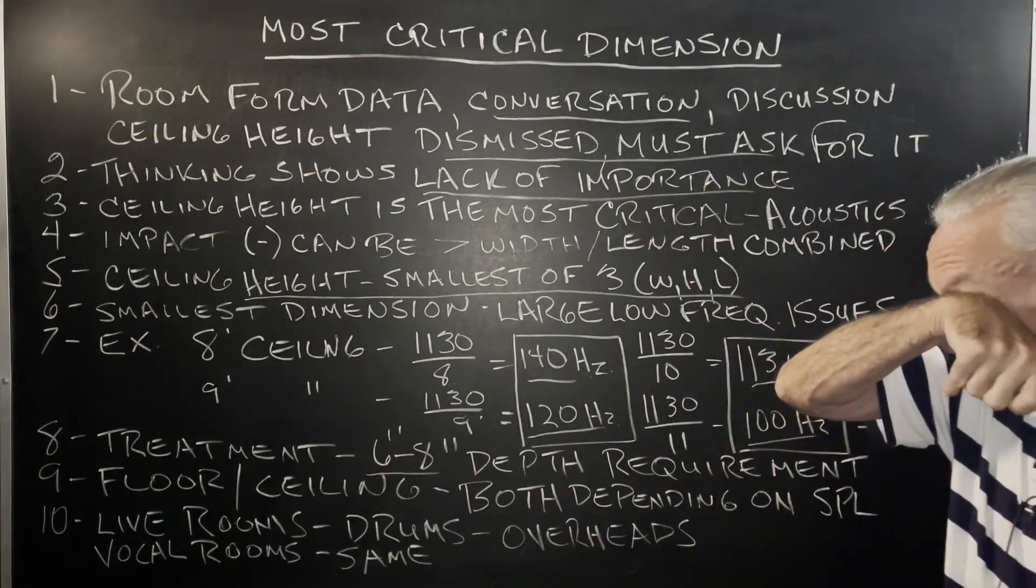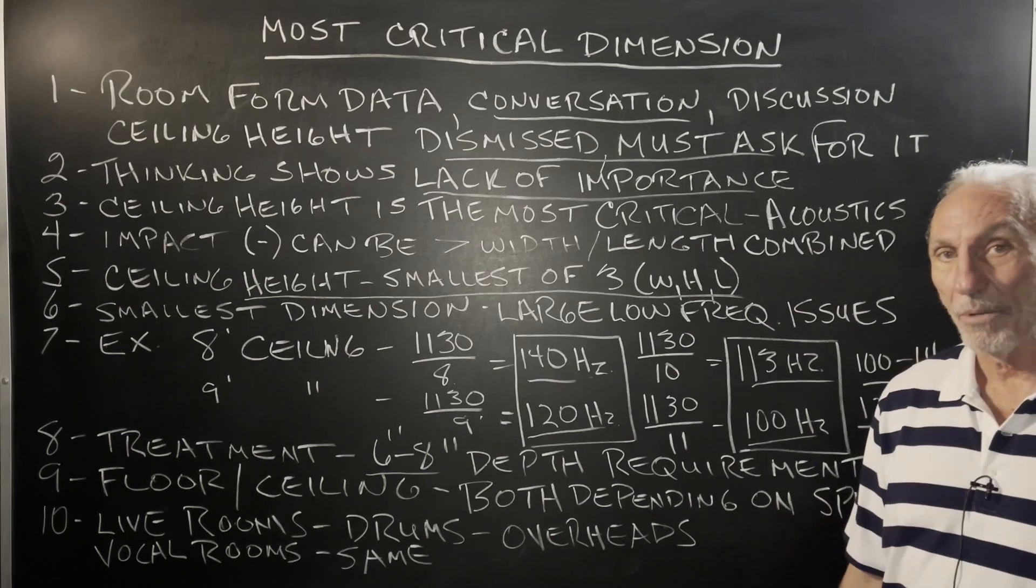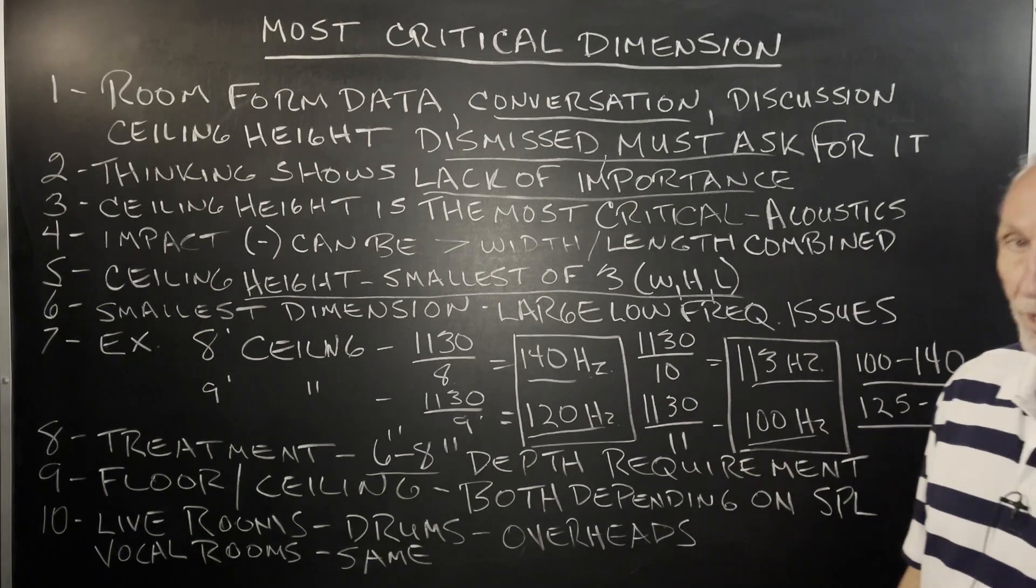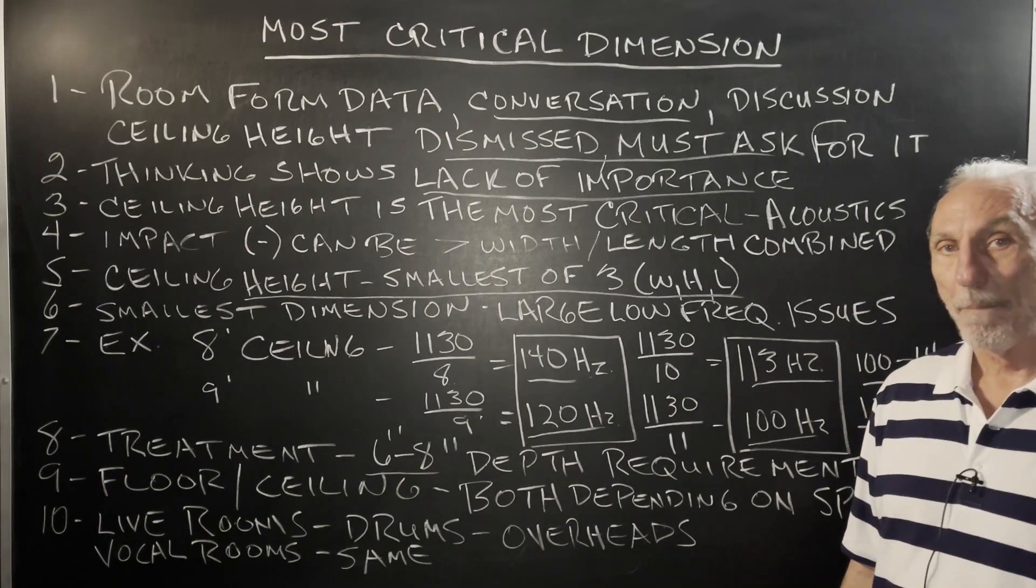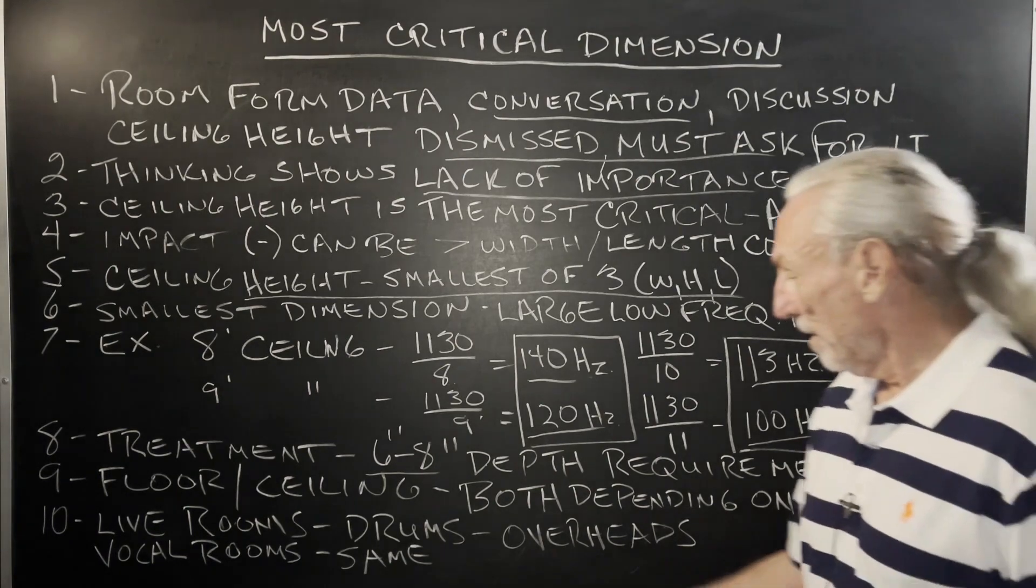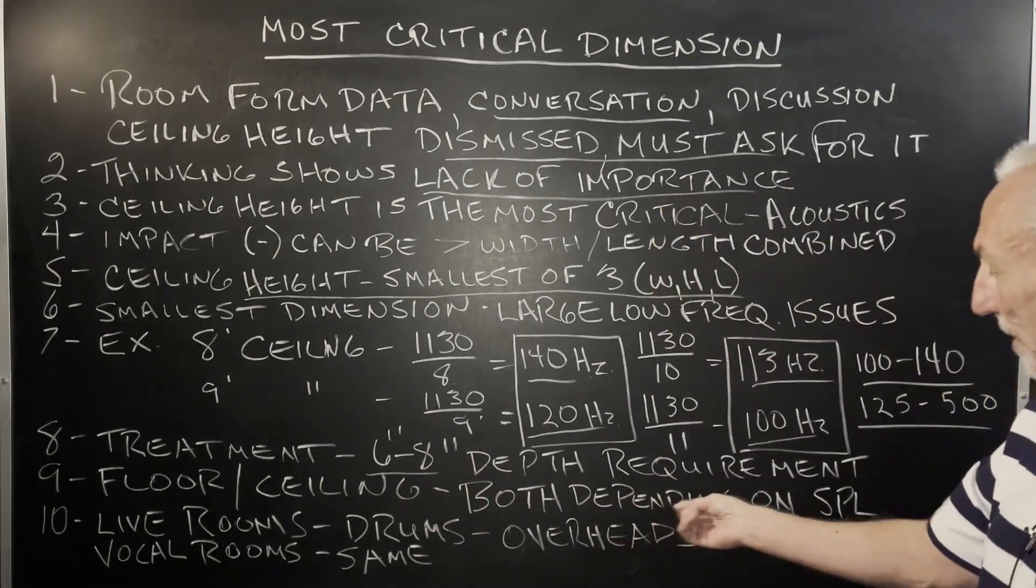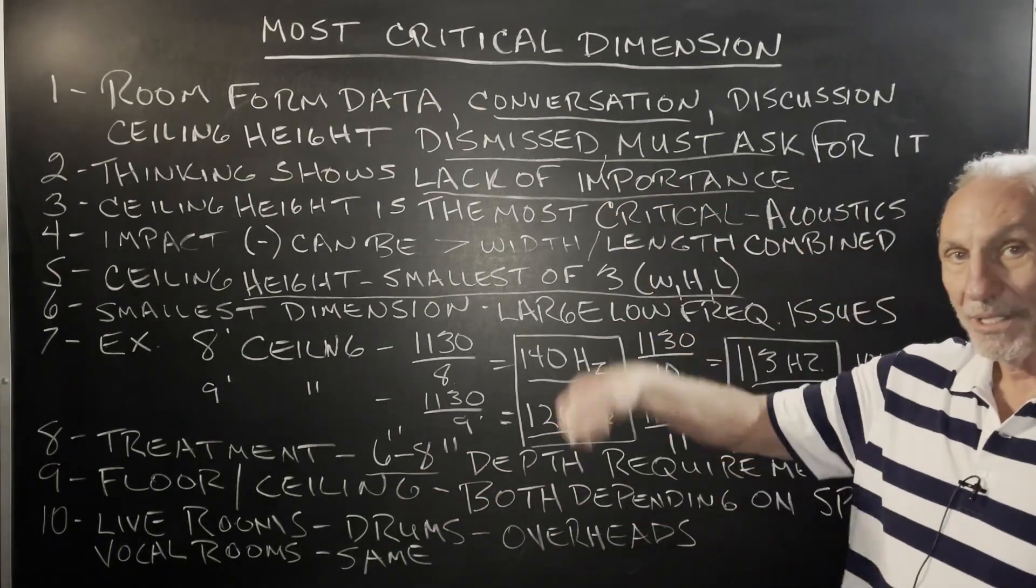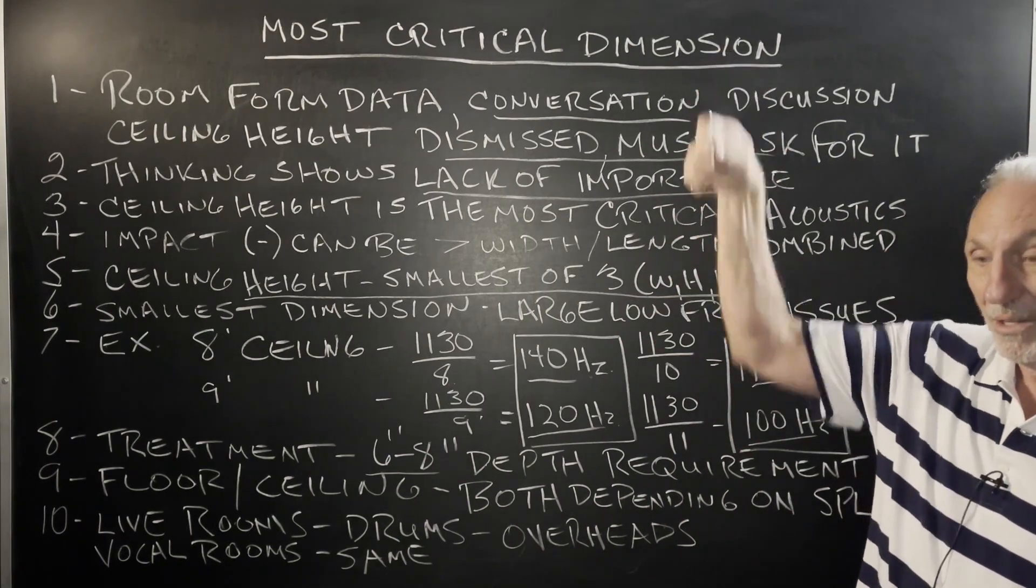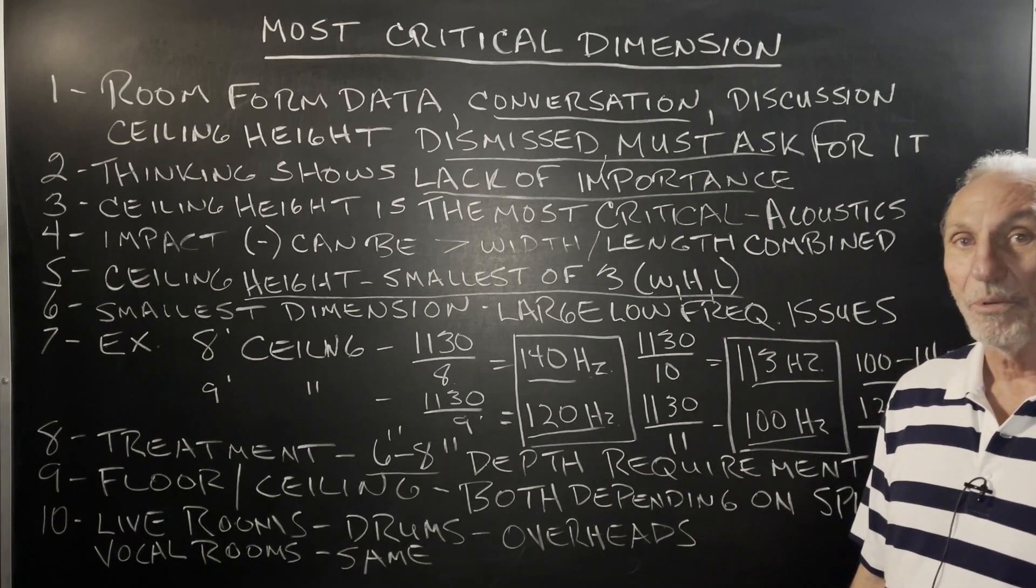With current technology, we need six to eight inches of cabinet depth to go after these issues successfully. Foam won't do the whole thing. So, when you need this kind of depth, you have a floor to ceiling requirement, because that's where the problem's coming from. So, you can treat the ceiling, or you can treat the floor, or sometimes you have to treat both. Depends on the usage of the room.